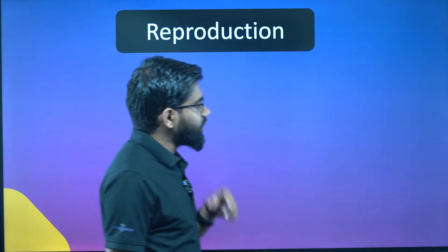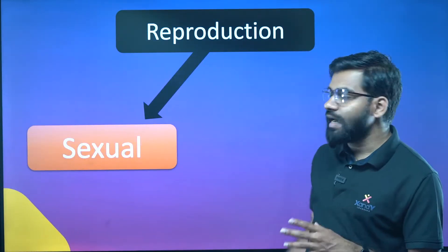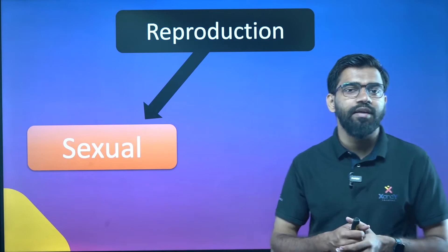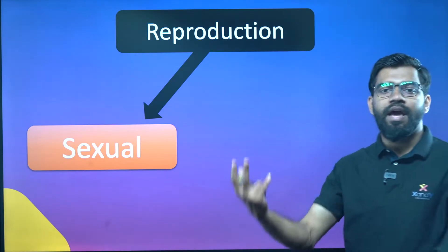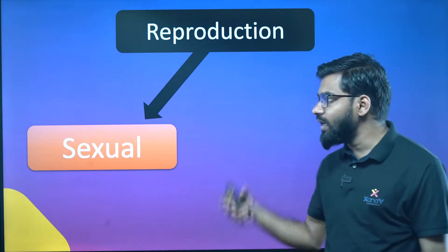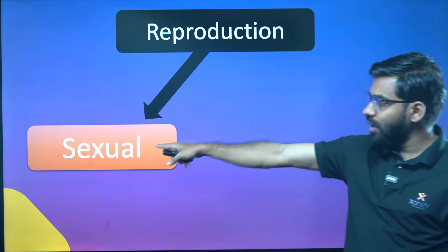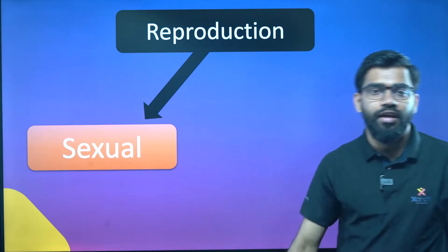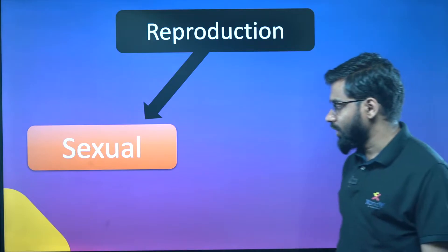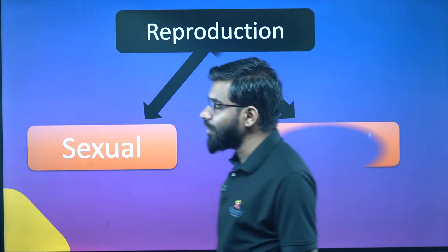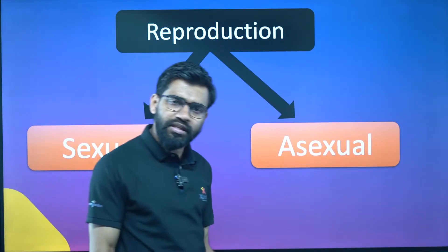So, what do we call reproduction? There are two types of reproduction. One type is sexual reproduction, and the second type is asexual reproduction.